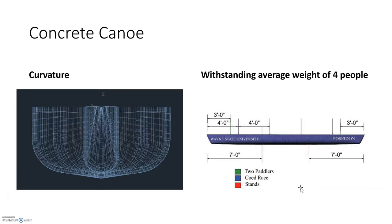Additionally, the curvature of a canoe and its small width makes it very hard to mimic with concrete. The flexural moments of having paddlers in a canoe while also putting the canoe on a stand puts a lot of stress onto the canoe and onto the concrete. It is very hard to account for and design for.